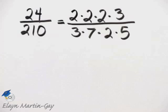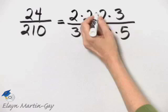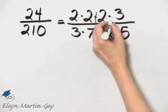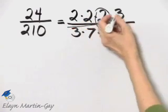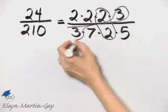Once we prime factor the numerator and the denominator, we can see if there are any common factors. Notice there's a common factor of 2, and there's also a common factor of 3.